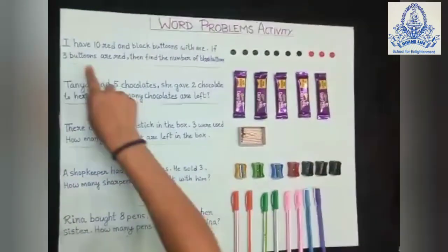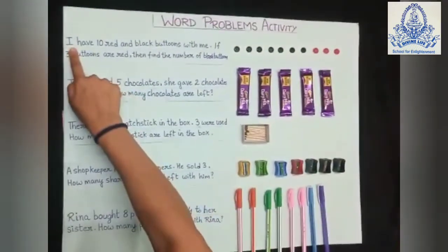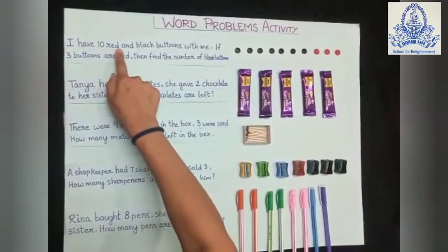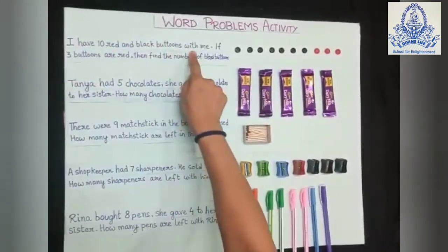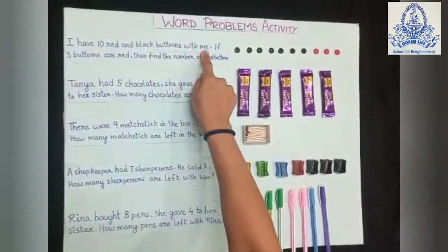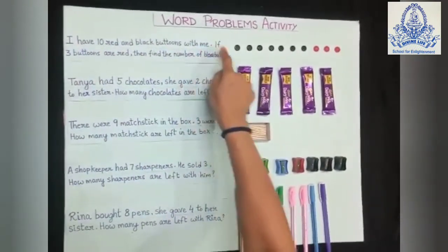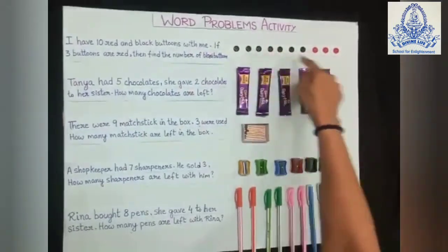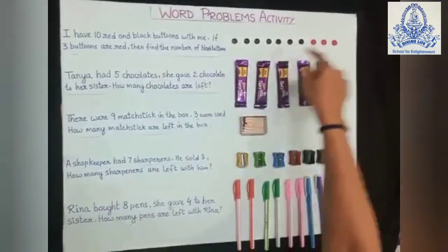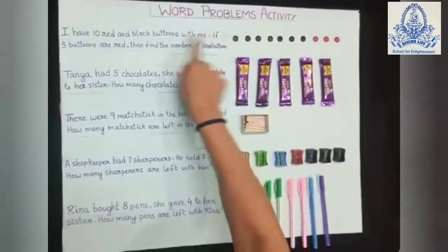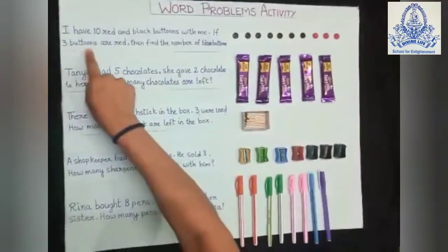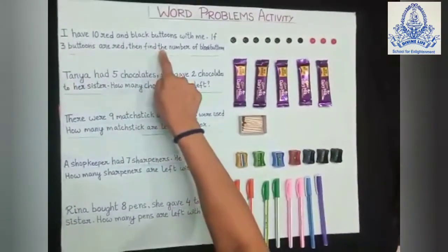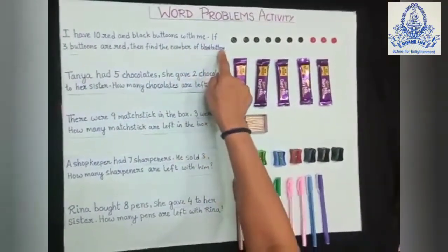Let me read the first one. I have 10 red and black buttons with me — 10 buttons total, red and black combined. If 3 buttons are red, then find the number of black buttons.